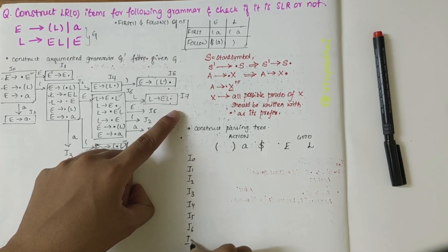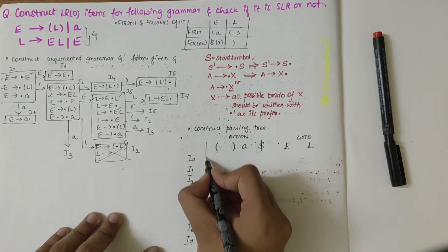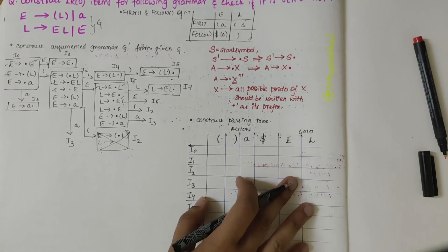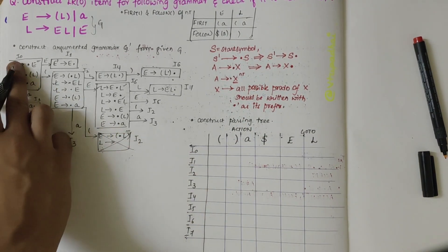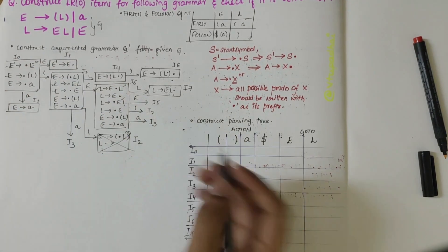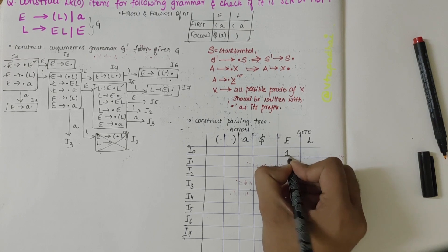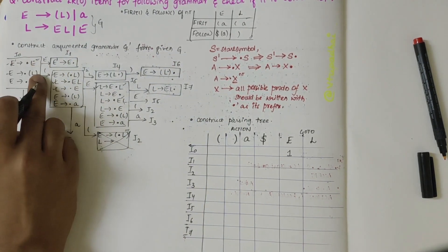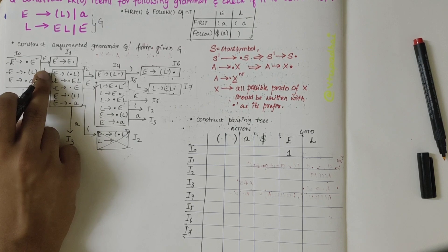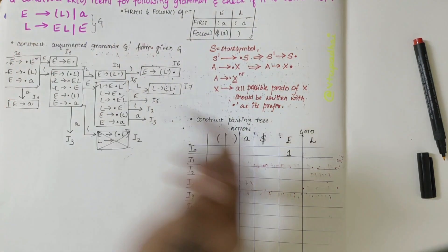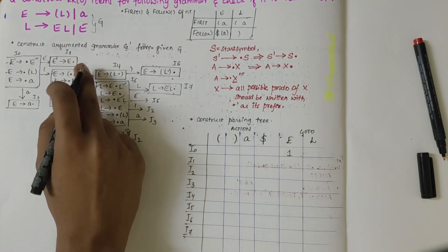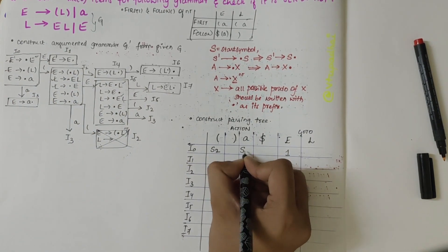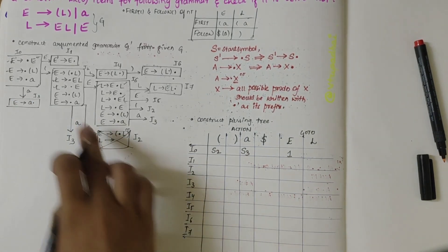Let me write down all the productions and start filling the table. In I0, over E I go to I1, so I write 1 under goto E. I0 over open bracket — a terminal — is being shifted to I2, so I write S2. And I0 over A, I write shift of 3.